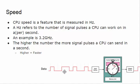We want to know how many signal pulses can it actually work on in a second. So an example would be 3.2 gigahertz. Alright, if that were the case, that means these signals that you see that we're sending, this data to the input device and eventually to the central processing unit,